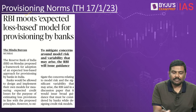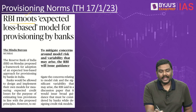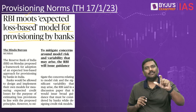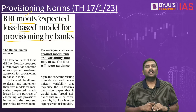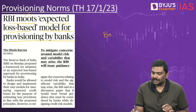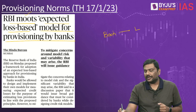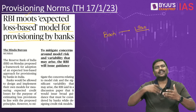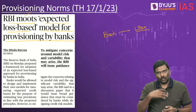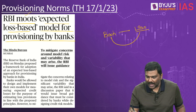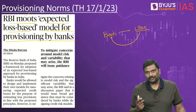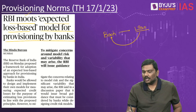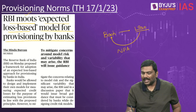Next article: RBI has proposed an expected loss-based model for provisioning by banks. Here is the concept. A bank gives a loan — a loan is an asset for the bank because it generates income. But if the bank cannot recover the loan, it becomes a non-performing asset (NPA). Traditionally, the definition of NPA is: if a borrower doesn't repay for 90 days from the due date, that account is classified as an NPA.